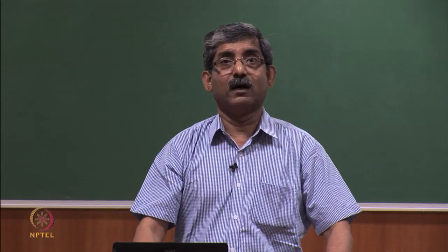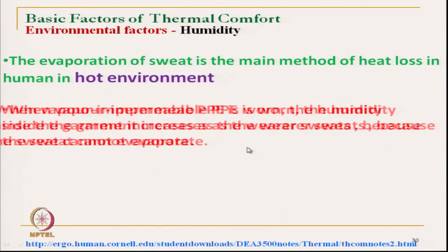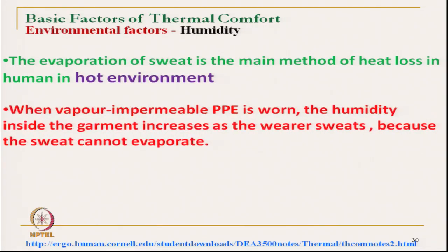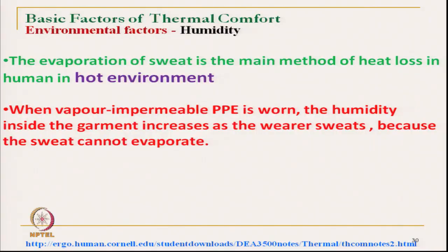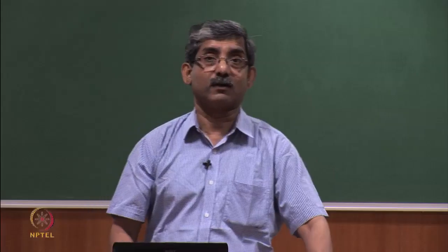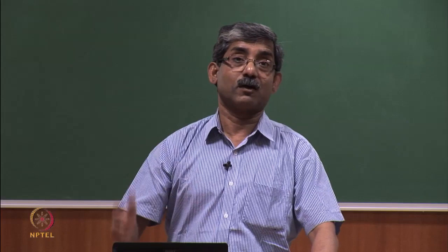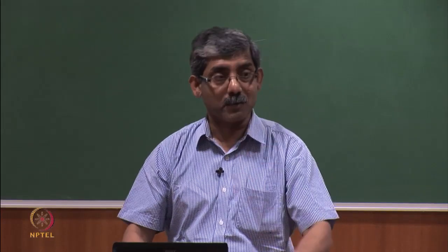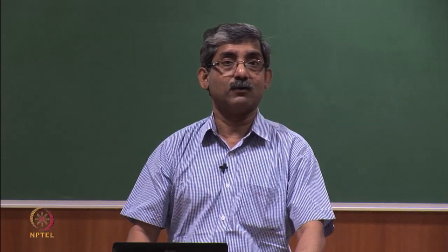Evaporation of sweat is the main method of heat loss for humans in a hot environment, and that evaporation is assisted by airflow. In personal protective clothing like firefighter clothing, if the wearer is not able to release evaporation of sweat — if the vapour permeability is poor — then the wearer will not be able to be comfortable.